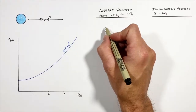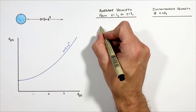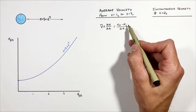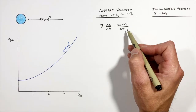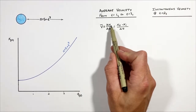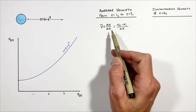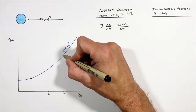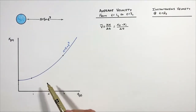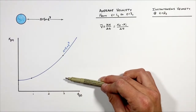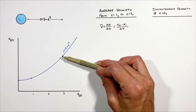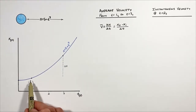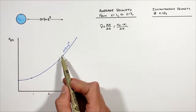Looking first at average velocity — average velocity is given by the displacement over the change in time. If we look at average velocity as a change in position over a change in time, you can see from a time of one second to a time of three seconds there's a change in position, and that change in position is represented on our graph as a vertical shift from this point to this point. Our change in time is the horizontal shift from this point to this point.